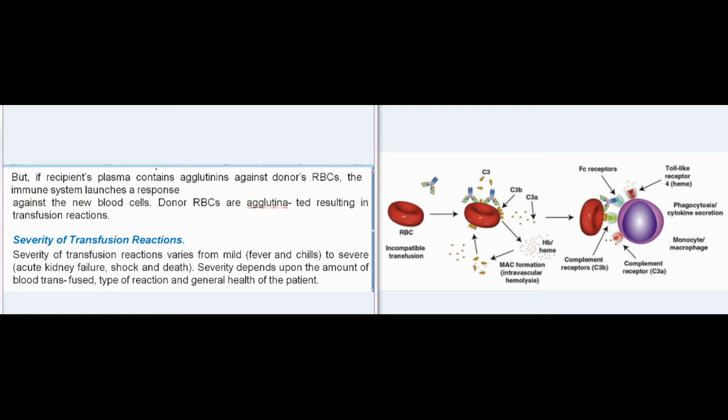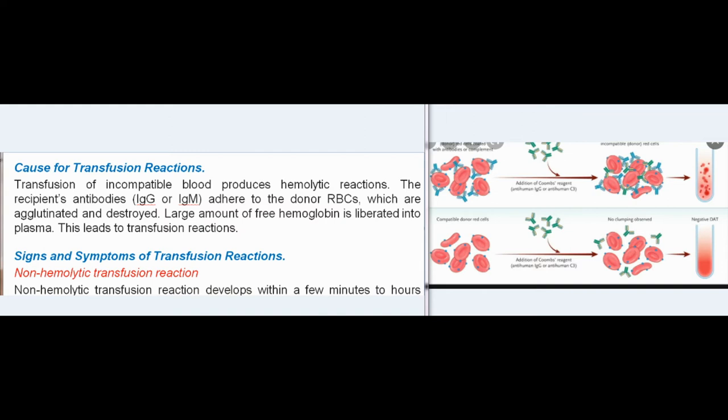Severity of Transfusion Reactions: Donor RBCs are agglutinated, resulting in transfusion reactions. Severity varies from mild (fever and chills) to severe (acute kidney failure, shock, and death). Severity depends upon the amount of blood transfused, type of reaction, and general health of the patient. Cause of Transfusion Reactions: Transfusion of incompatible blood produces hemolytic reactions. The recipient's antibodies (IgG or IgM) adhere to the donor RBCs, which are agglutinated and destroyed. Large amounts of free hemoglobin are liberated into the plasma, leading to transfusion reactions.